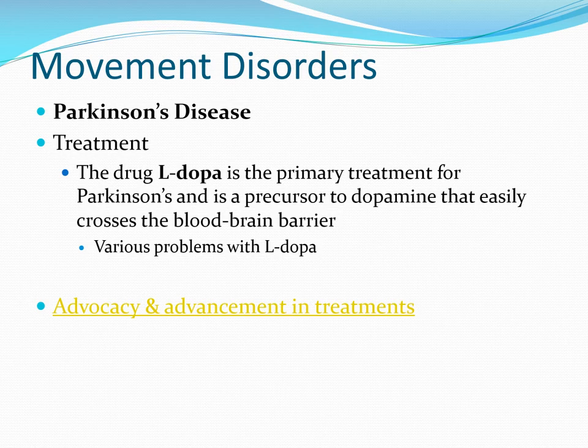A treatment that has been around for decades for Parkinson's disease is L-DOPA. It crosses the blood-brain barrier, which dopamine itself cannot. L-DOPA is a precursor to dopamine — one of the intermediate steps in biosynthesis from the original amino acids. There's also a link here of Michael J. Fox discussing his own Parkinson's, showing symptoms and his advocacy work over the past couple of decades.